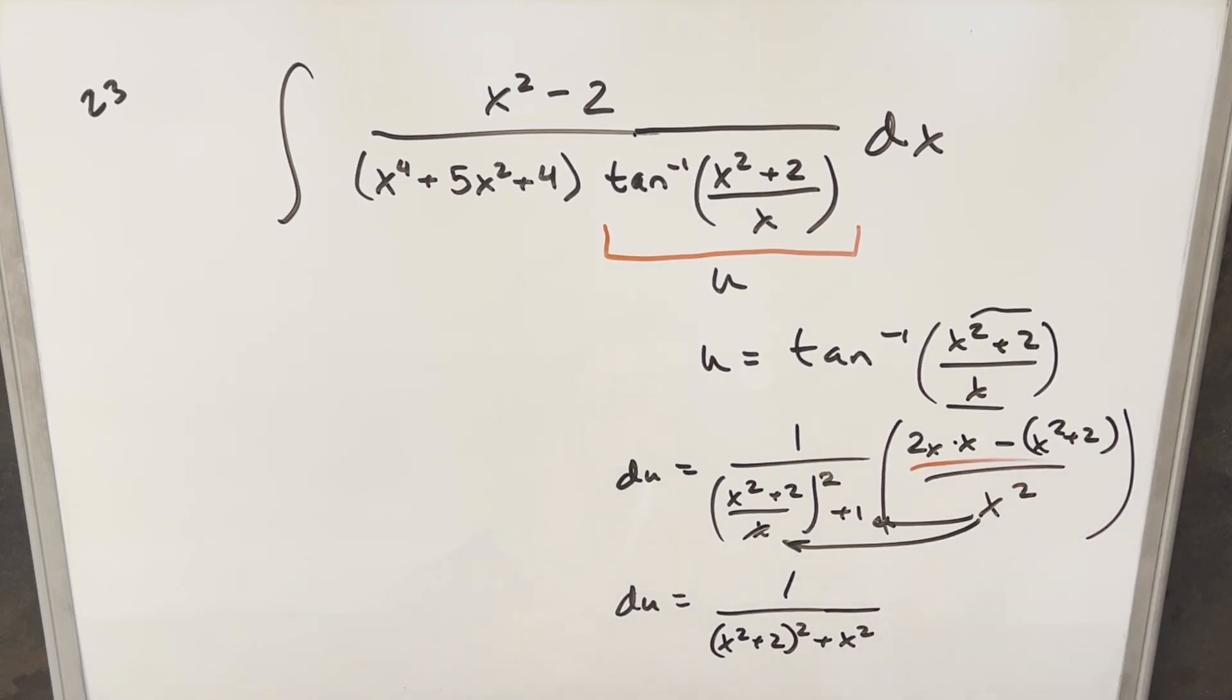And then here in the numerator, what's going to happen is 2x squared here minus x squared is going to give me, we're multiplying in x squared. And then the minus sign distributed to the 2 is just going to be x squared minus 2.